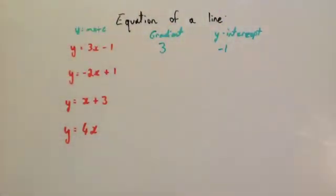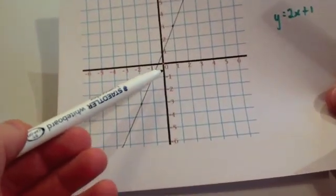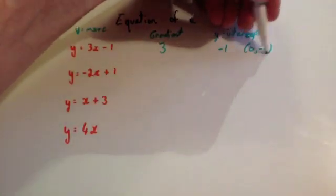If you wanted to write that as a coordinate, though, because it crosses at minus 1 there, that means it would be 0 across minus 1 down, so as a coordinate, it would be 0, minus 1.